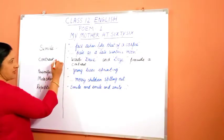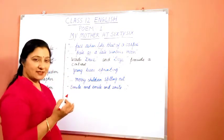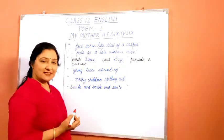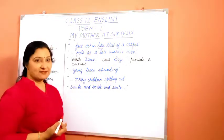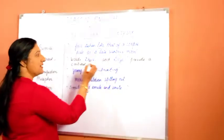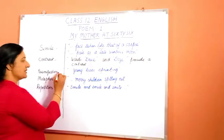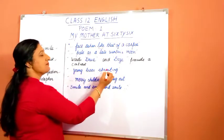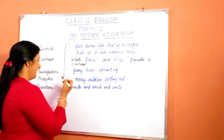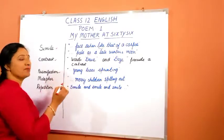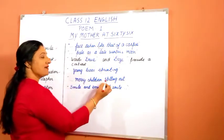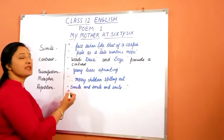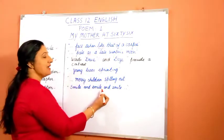Then she uses contrast. The contrasting words are 'drive' and 'doze' — 'drive' suggests energy and 'doze' suggests passivity. Then she uses personification in the expression 'young trees sprinting'. She uses metaphor in the expression 'merry children spilling out'. Then repetition is used in the words 'smile, smile, and smile'.